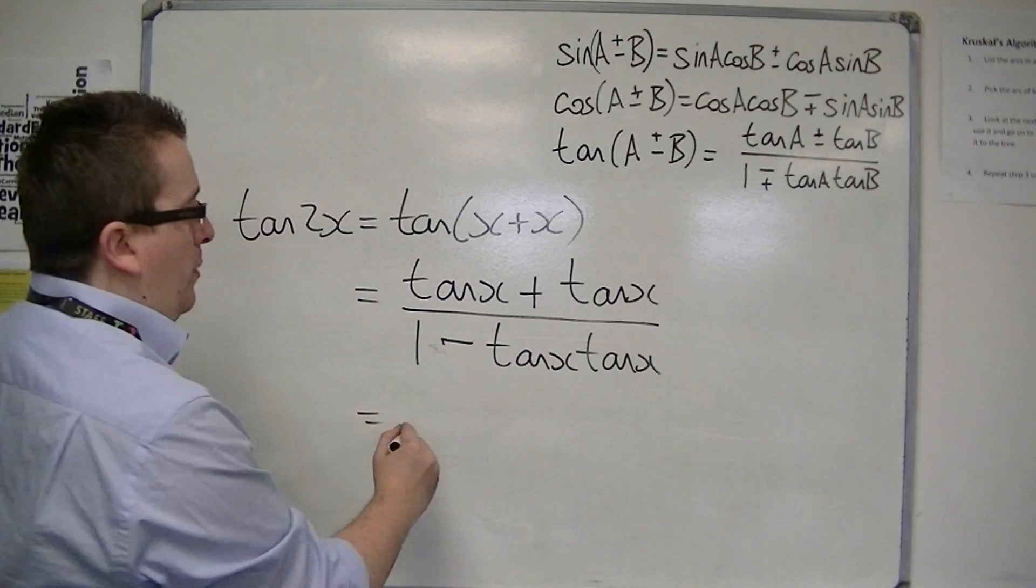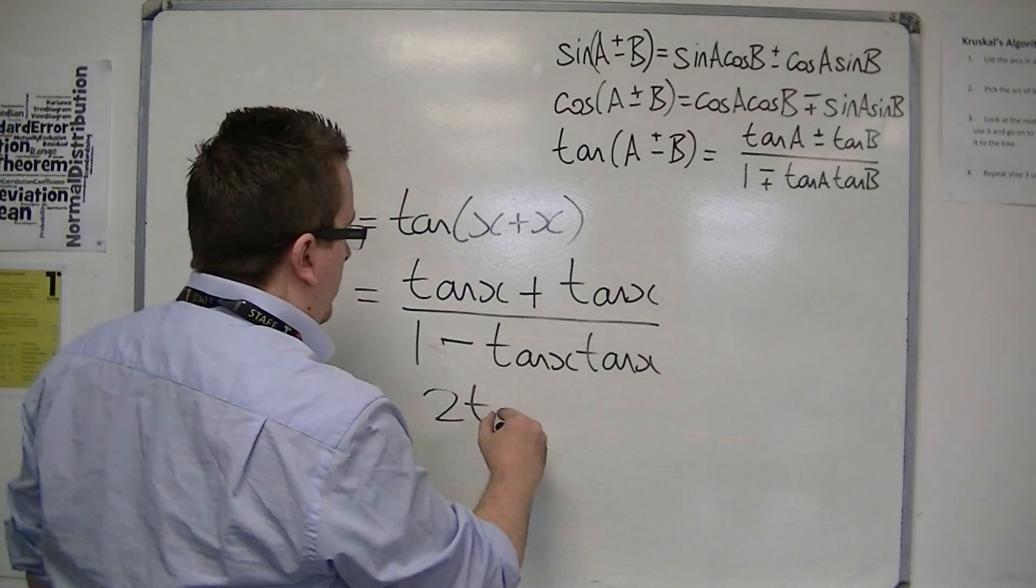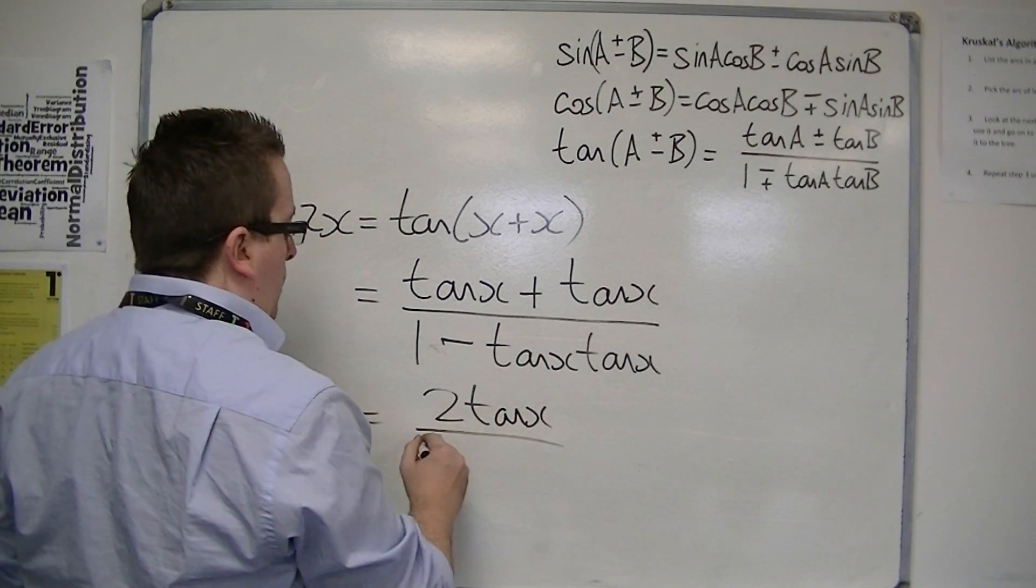So if I simplify that, then I've got tan x plus tan x on the top, that's 2 tan x. And on the bottom, I've got 1 minus tan squared x.